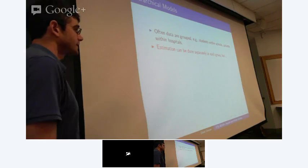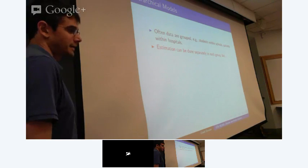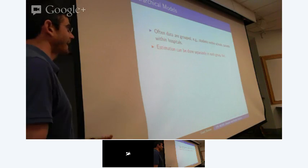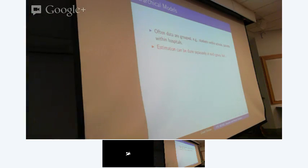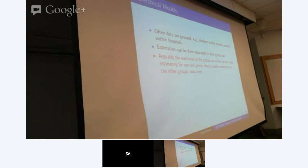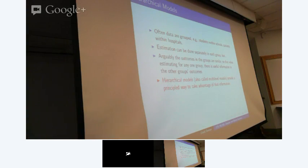You could do estimation separately in each group and say everything is totally different in this school than another, but you might not have much data in a given school. You'd also want to make inferences about the overall population of schools and students. Doing estimation completely separately in each group would be both inefficient and not address the inferences you're interested in. Hierarchical models are also called multi-level models, and they provide a nice way to borrow information across schools.